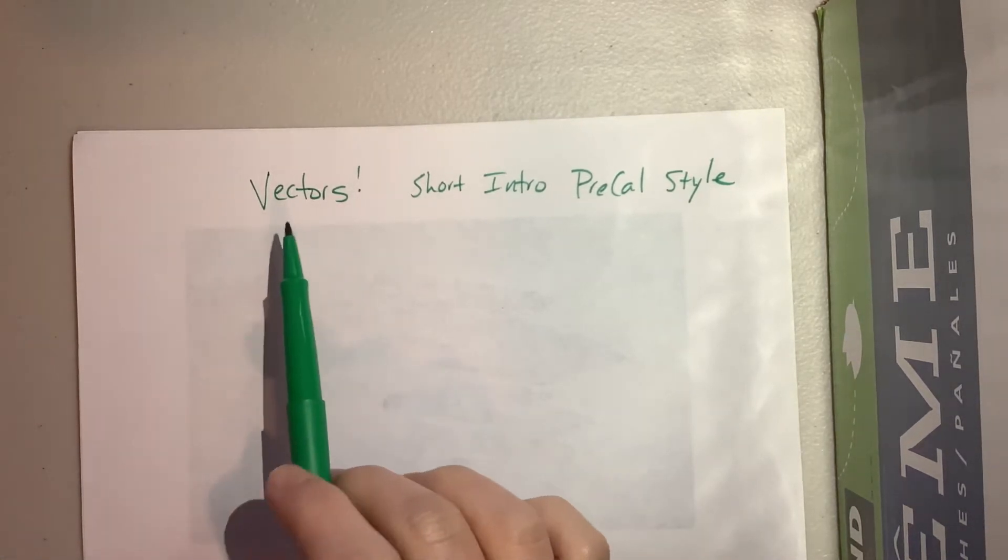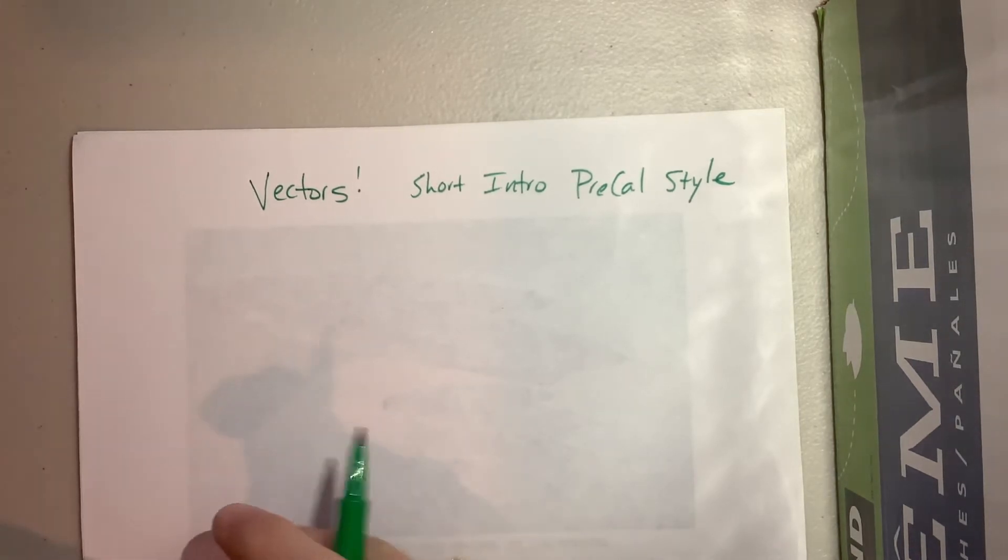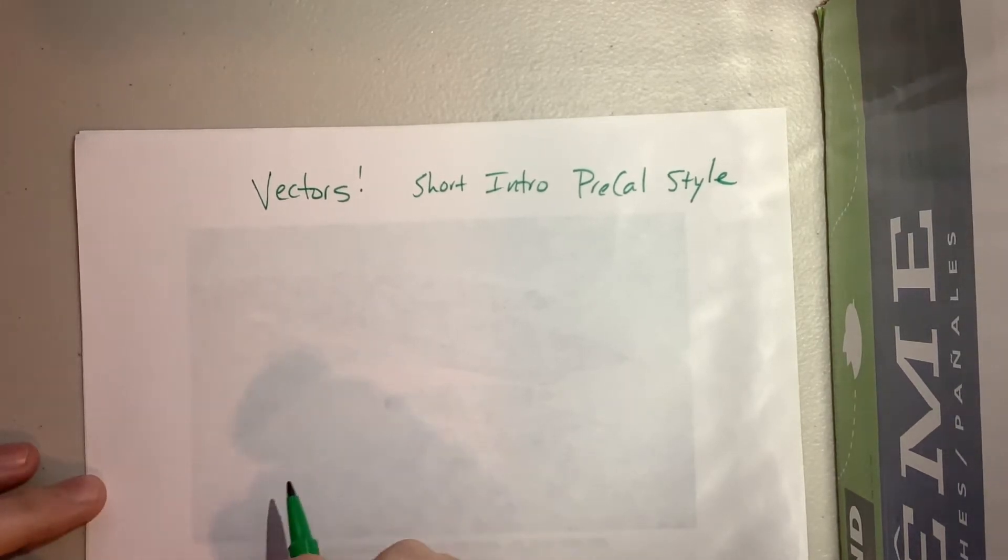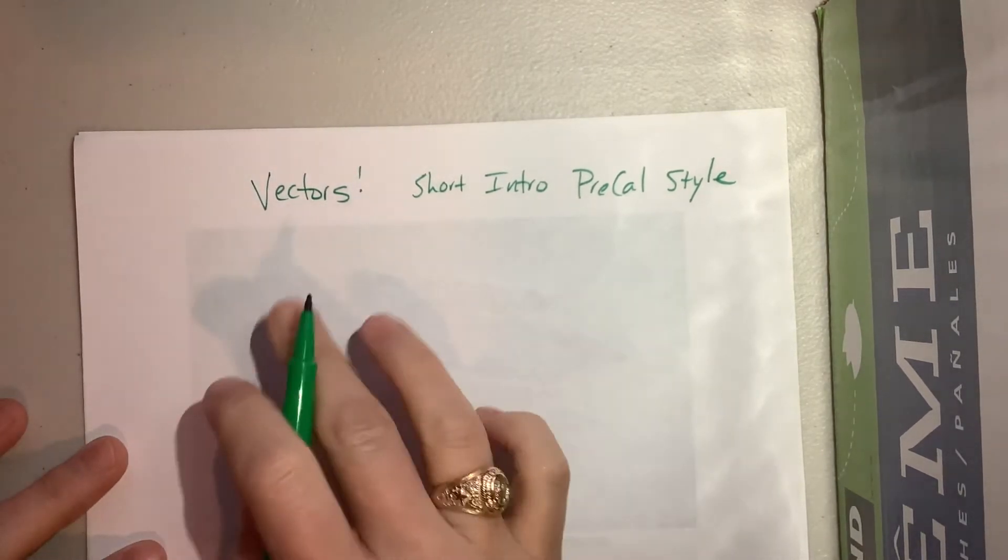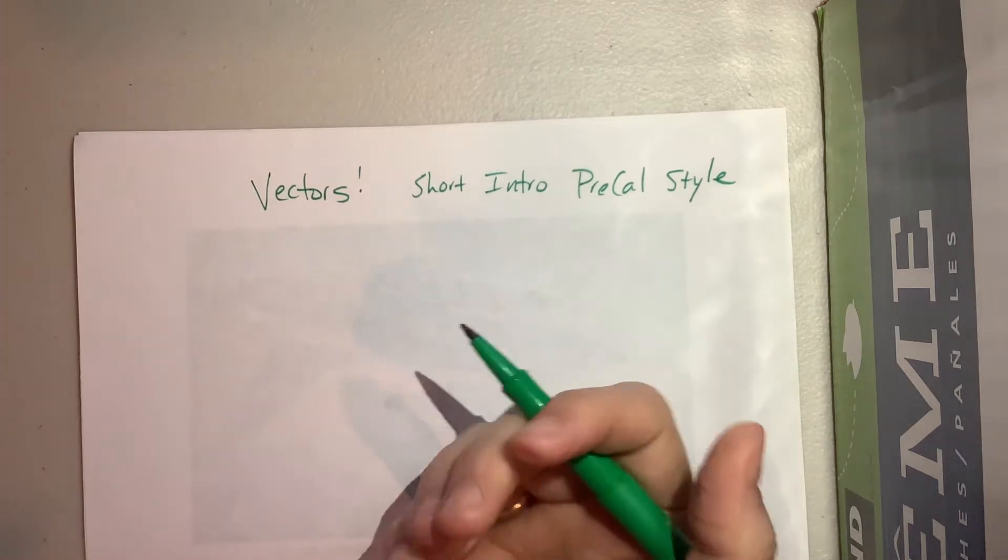Okay, so hopefully you watched that little cartoon from Despicable Me where it was the villain Vector who is creating crime with both direction and magnitude. Okay, so basically a vector is a quantity with both direction and magnitude.